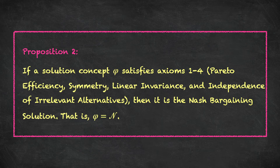So let's now prove Proposition 2 — the result that if we take any bargaining solution concept that satisfies axioms 1 through 4, then it must be the Nash bargaining solution. Nash's proof is very beautiful and can be shown using just simple diagrams. Let's go through the proof now.